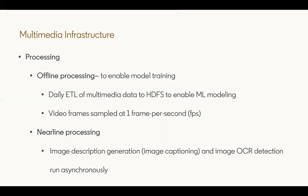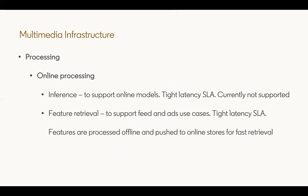An example of nearline processing is image captions and image object character recognition or OCR detection. Online processing involves processing image data directly during inference time. This involves tight SLA, so we do not currently support it. For feature retrieval, which also has tight latency SLA, what we do is process features offline and push them to online stores.